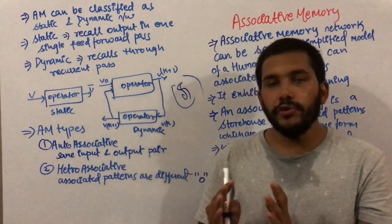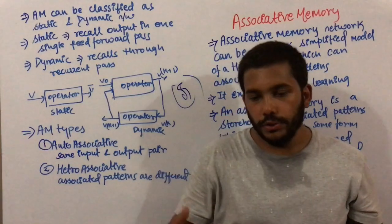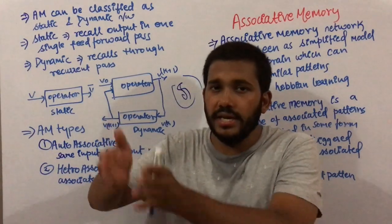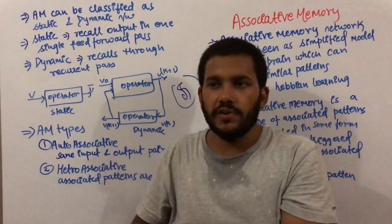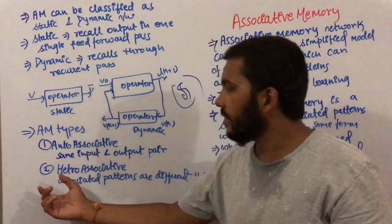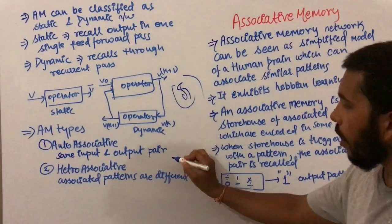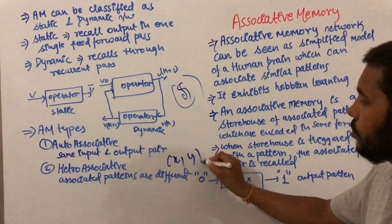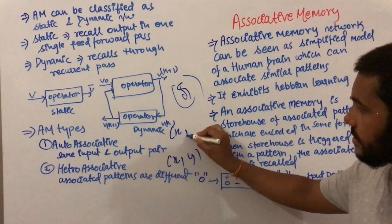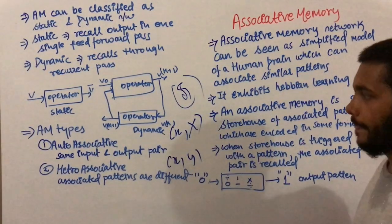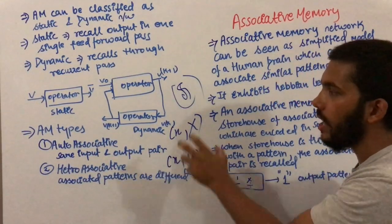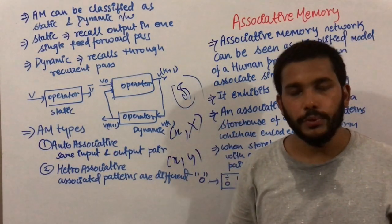In hetero associative memory, the associated patterns are different. If you are recalling your teacher, you might recall in which class this teacher taught you or in which school this teacher was present. You recall an X and corresponding to it you get a Y. So in hetero associative memory, input and output pairs are different, whereas in auto associative memory, if you recall X you get the complete X back — input and output pair are the same.